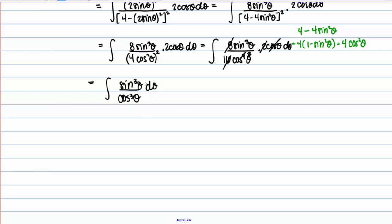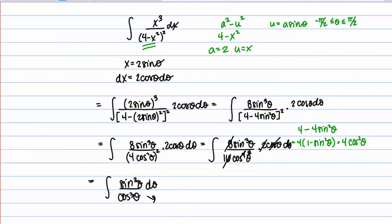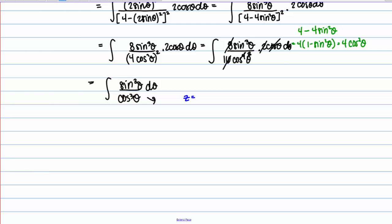Now we have this trigonometric integral to evaluate. There are a few different ways to approach it. One way is to write it as tangent cubed of theta d theta and convert some tangents to secants. But we can also work directly from the form with sines and cosines and apply a regular u-substitution. Let's go ahead and try that. Since we already used u earlier, I'll use z instead. So let z equal cosine of theta.